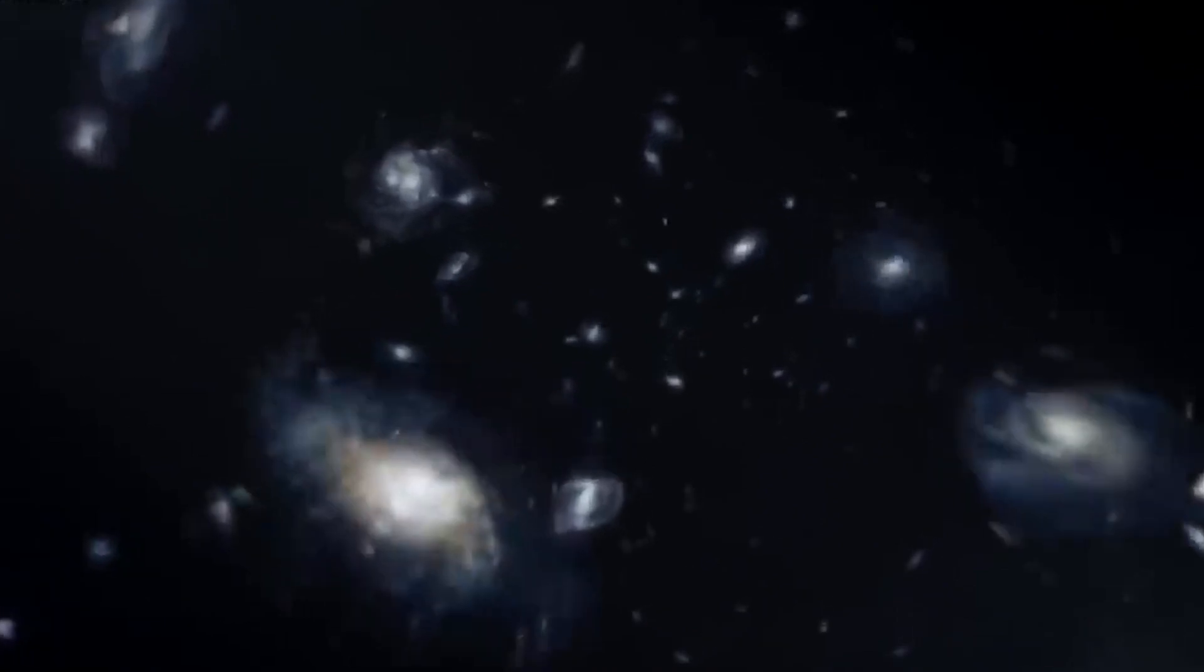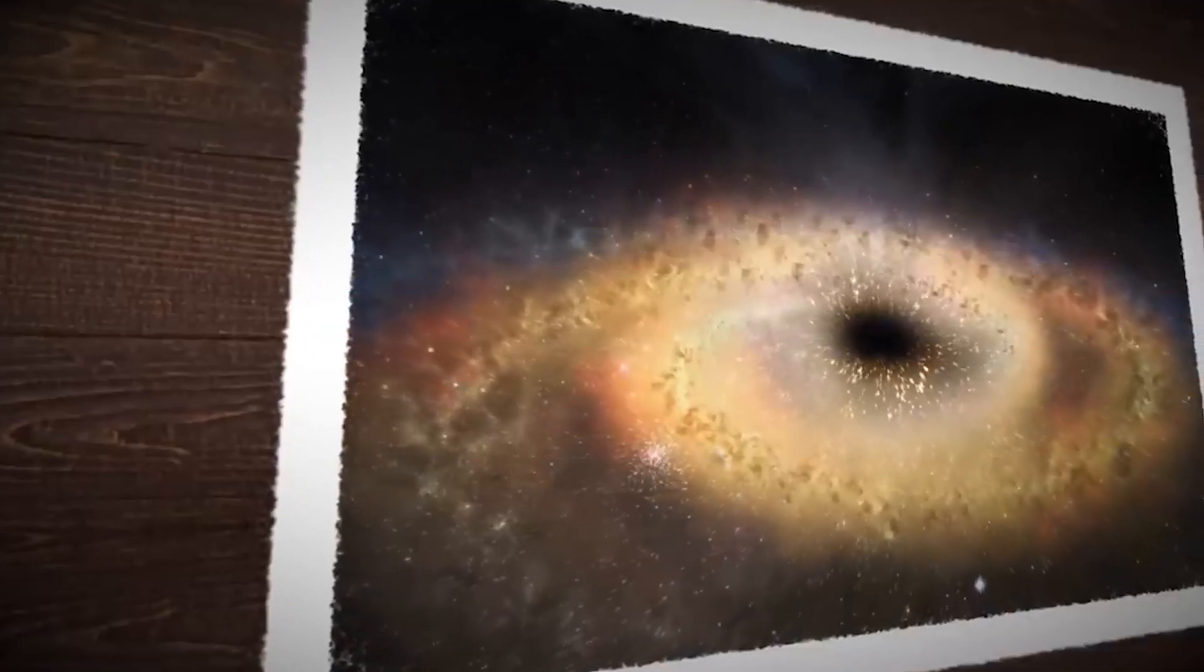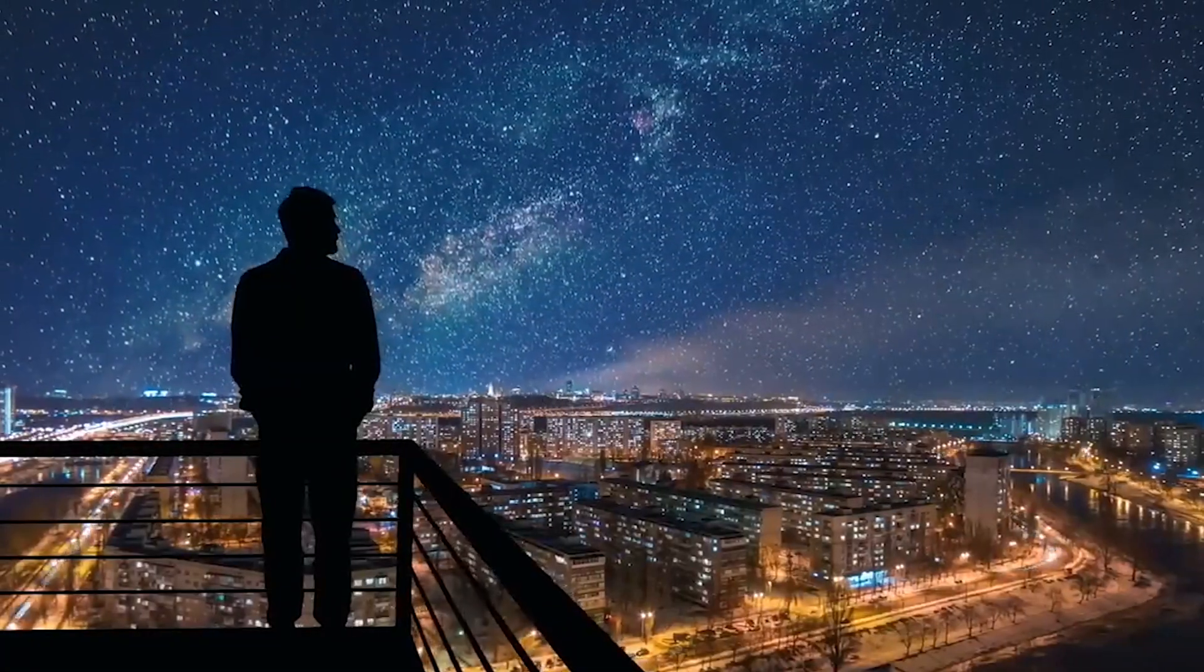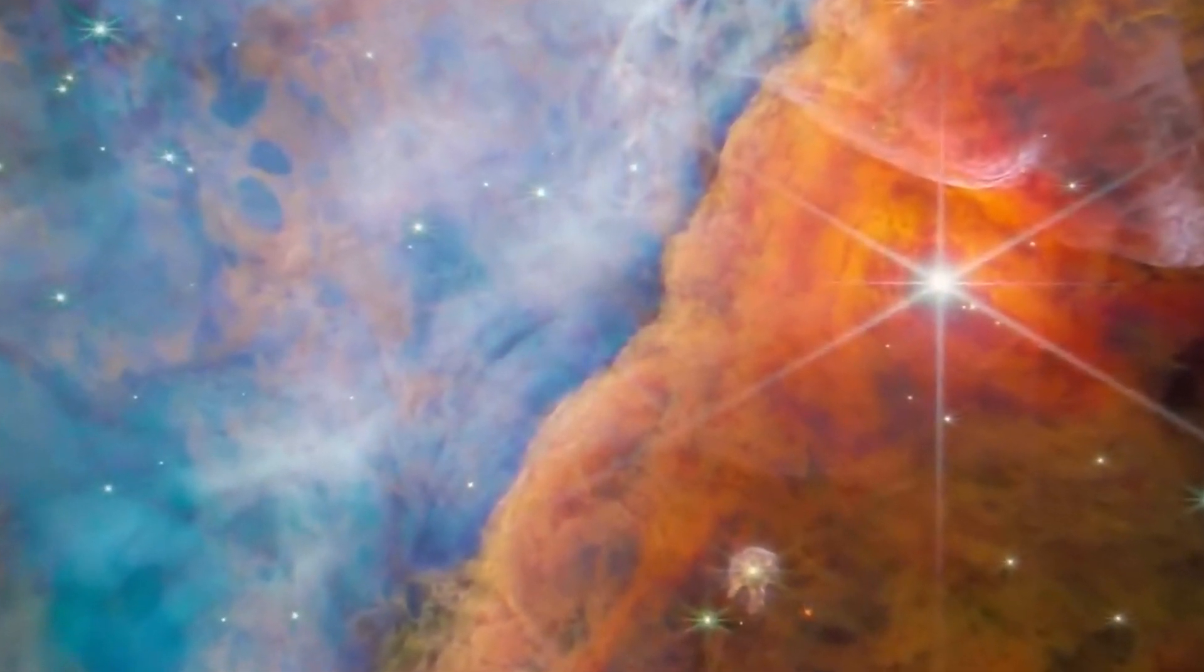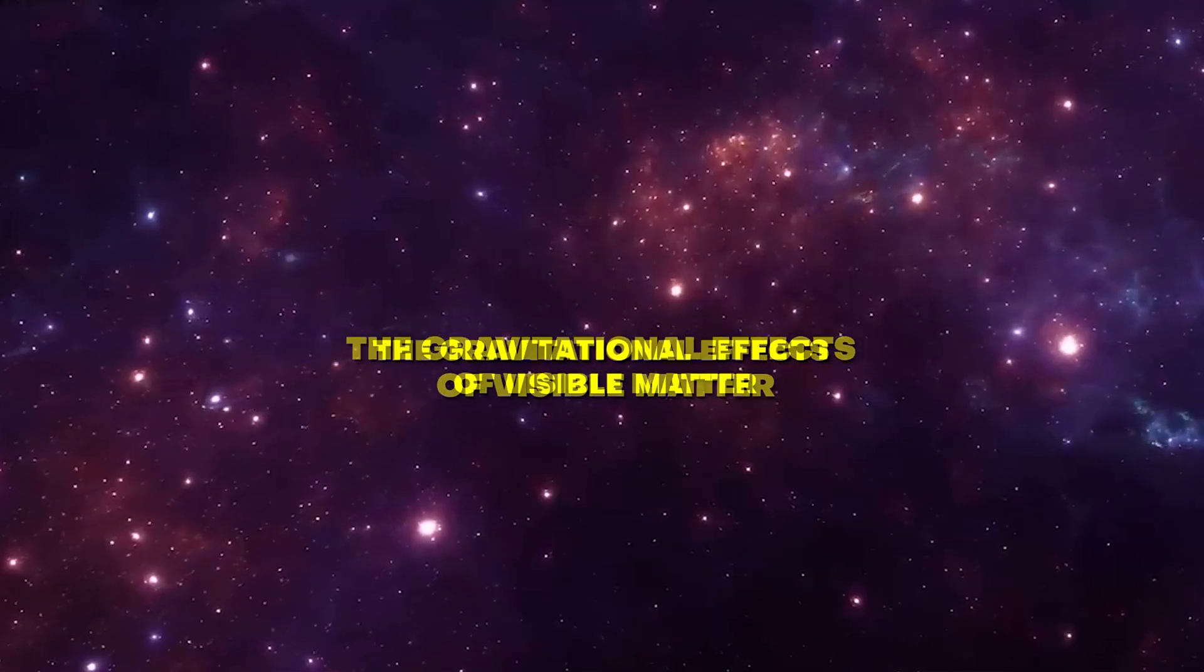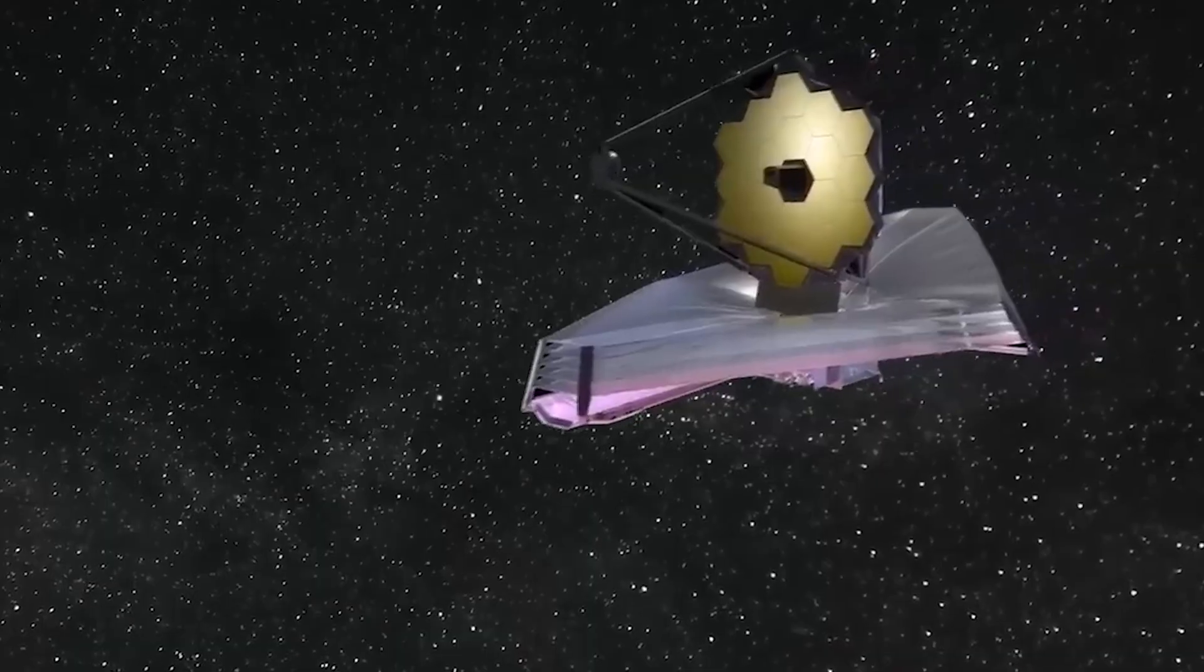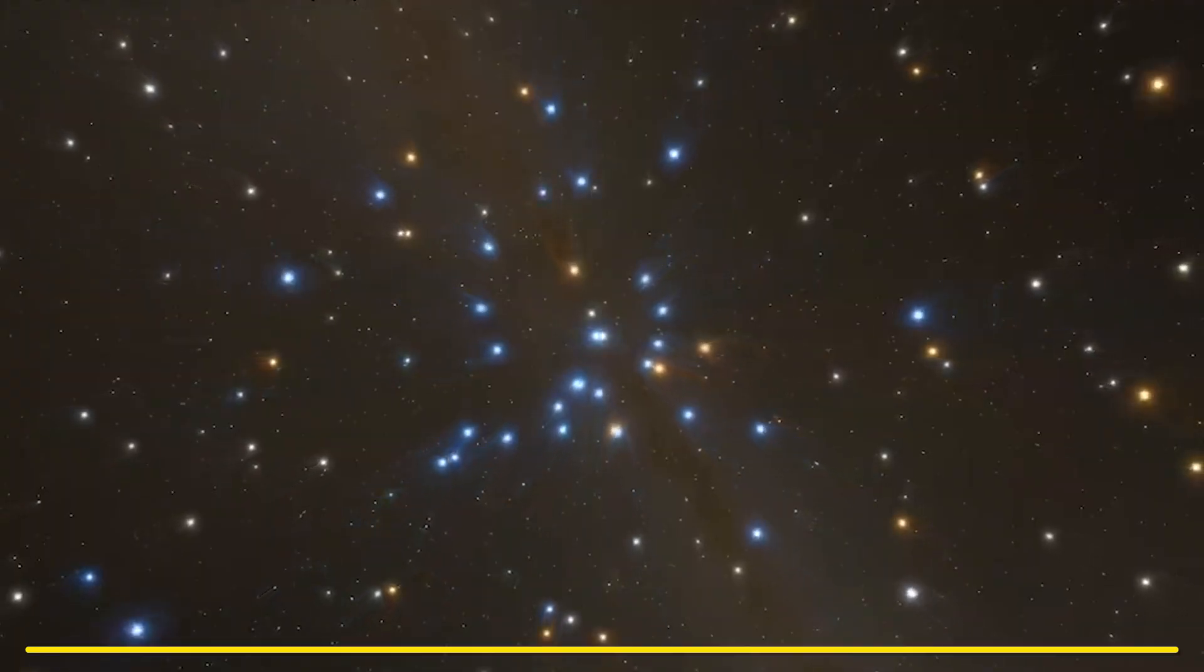The video is going to be amazing, so make sure you stick to the end. Scientists first proposed the existence of dark matter to explain certain observations that could not be accounted for by visible matter alone. The gravitational effects of visible matter, such as stars and galaxies, were not sufficient to explain the observed motion of objects within galaxies and the overall structure of the universe.